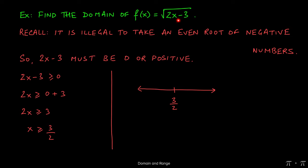So square root of 0 is perfectly fine, and that's why we include, indicated by the solid dot, the number 3 halves. Now we need to figure out, well, which numbers are included in the domain? Are there numbers to the left of 3 halves, or are there numbers to the right of 3 halves?